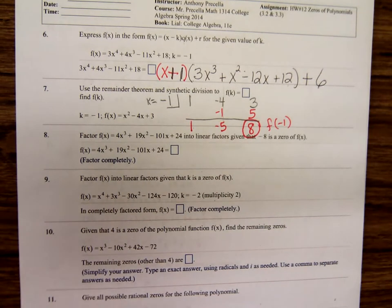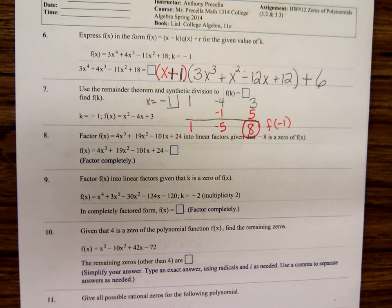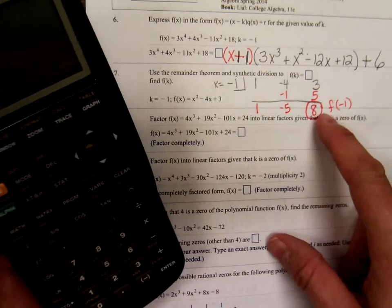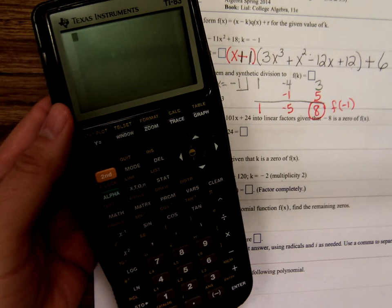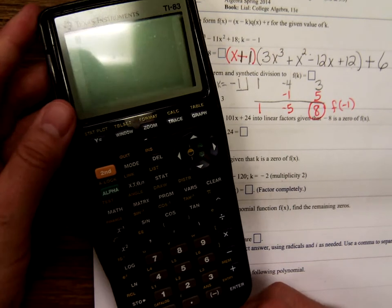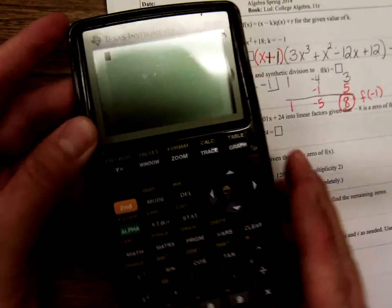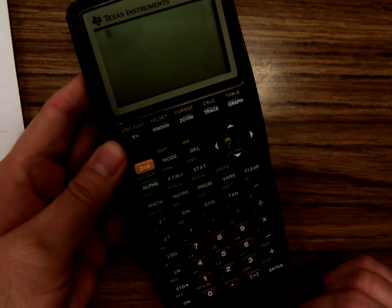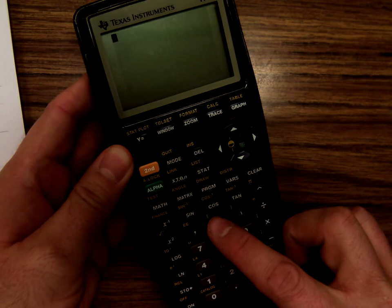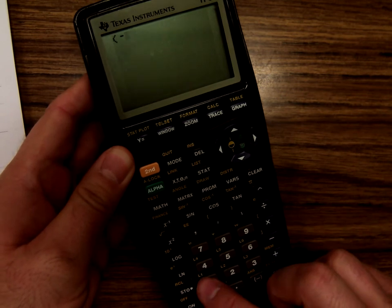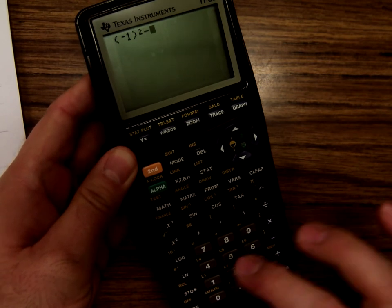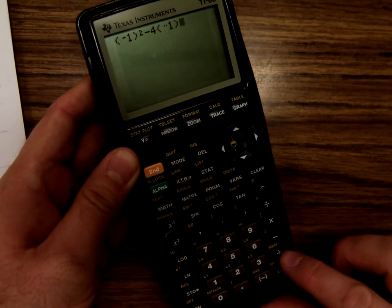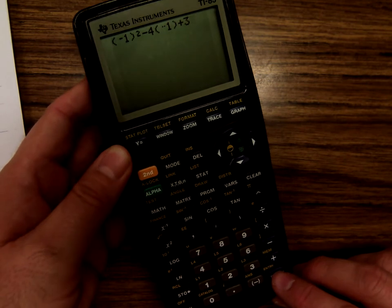Well, it might not be a bad idea to go ahead and just to convince yourself of that. Plug negative one in for x here. I'm going to use my calculator and plug negative one in. So I'm plugging negative one in to that polynomial. Negative one squared minus four times negative one plus three. When you plug negative one in, we better get eight.